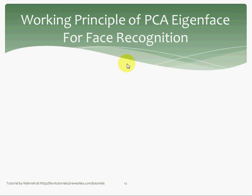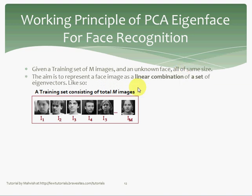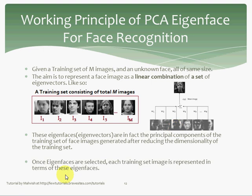Working principle of PCA eigenface for face recognition. Given a training set of M images and an unknown face, all of the same size, the aim is to represent a face image as a linear combination of a set of eigenvectors, or eigenfaces, as we saw earlier. These eigenfaces or eigenvectors are in fact the principal components of the training set of face images, generated after reducing the dimensionality of the training set to reduce computational effort needed to calculate significant eigenfaces.